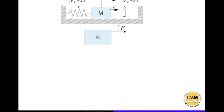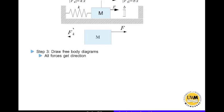The next step is to draw the free body diagram — all forces acting on the mass. Force F is already acting on it. Since the mass moves x in the positive direction, the spring goes into extension and its tendency is to pull the mass back, so spring force Fk acts in the negative x direction. The damper is compressed in that direction and pushes back on the mass, so damping force Fb also acts in the negative x direction.